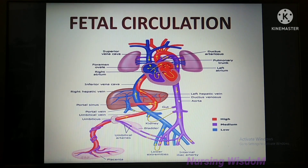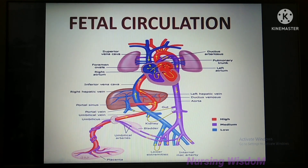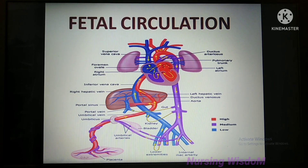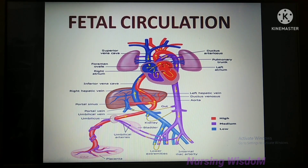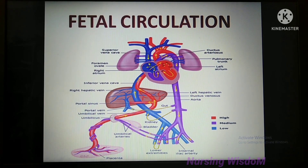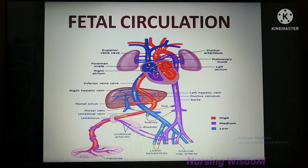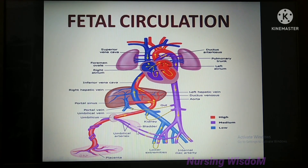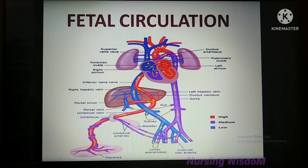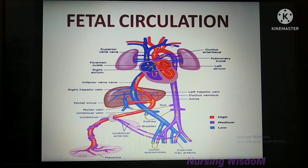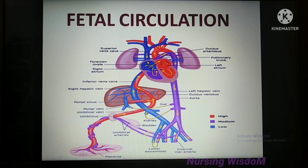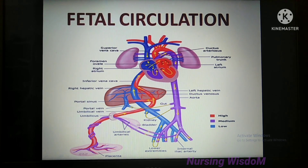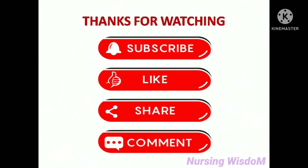The deoxygenated blood travels back through the internal iliac arteries, leading to the hypogastric arteries, and ultimately into the umbilical arteries, returning to the placenta to get purified, and the circulation continues. When blood reaches the umbilical artery, the oxygen saturation level is 58%. This circulation ensures that the head, brain, and upper part of the fetus are perfused with well-oxygenated blood compared to the lower extremities. That's all about fetal circulation.